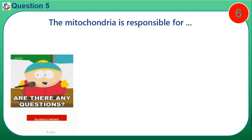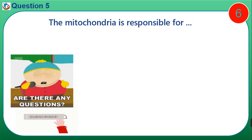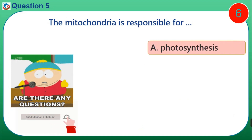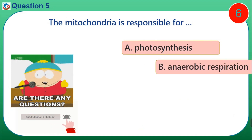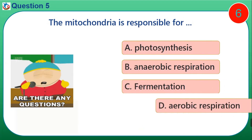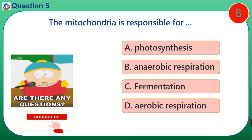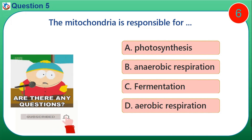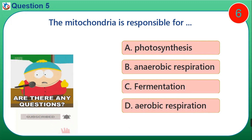Question 5. The mitochondria is responsible for dash. A. Photosynthesis. B. Anaerobic respiration. C. Fermentation. D. Aerobic respiration.